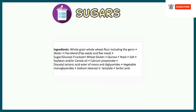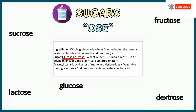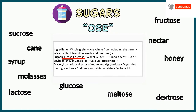Did you know there are different names for sugar on nutrition labels? Look for words ending in '-ose,' such as sucrose, dextrose, glucose, fructose, lactose, or maltose. Other words that also mean sugar include agave, nectar, and syrup.